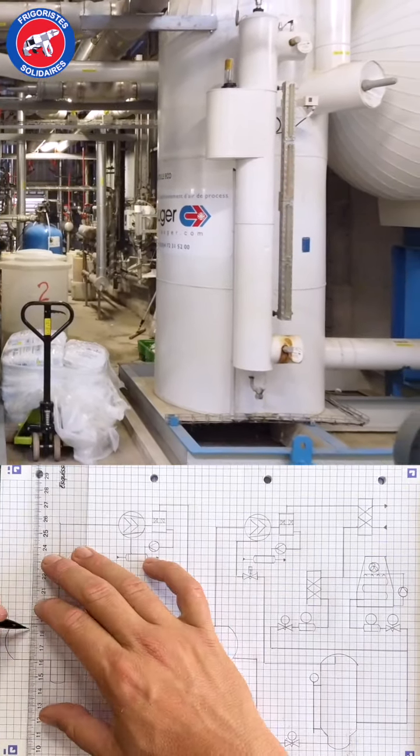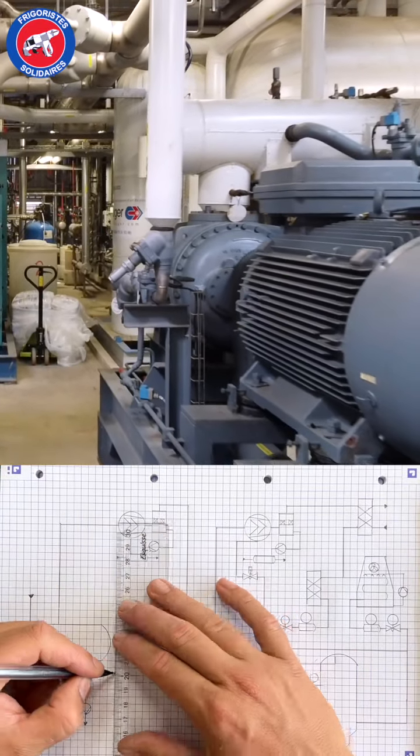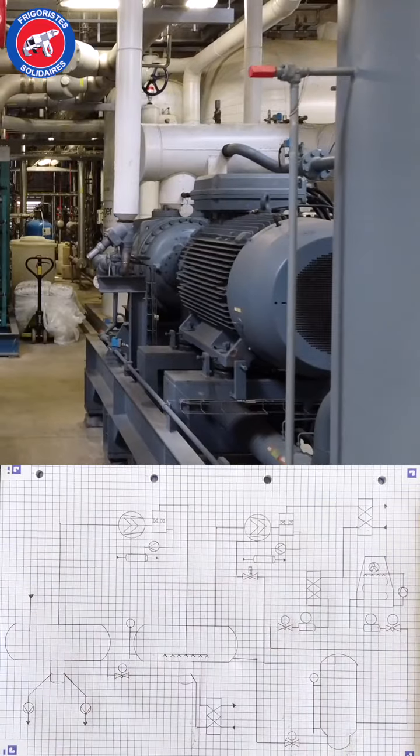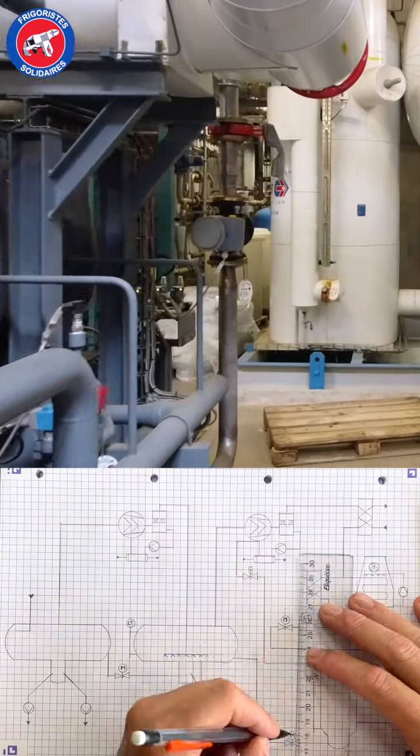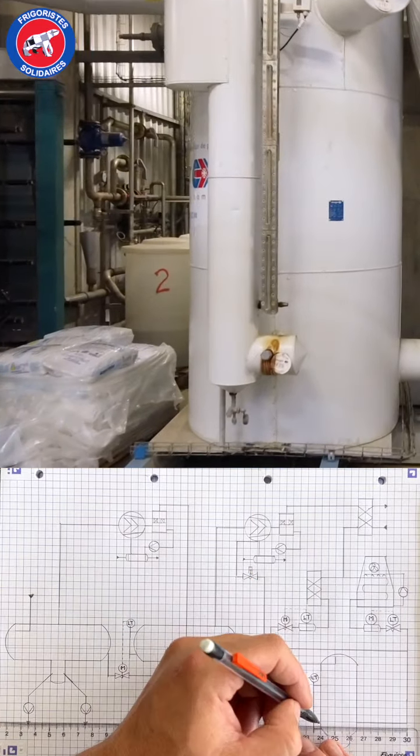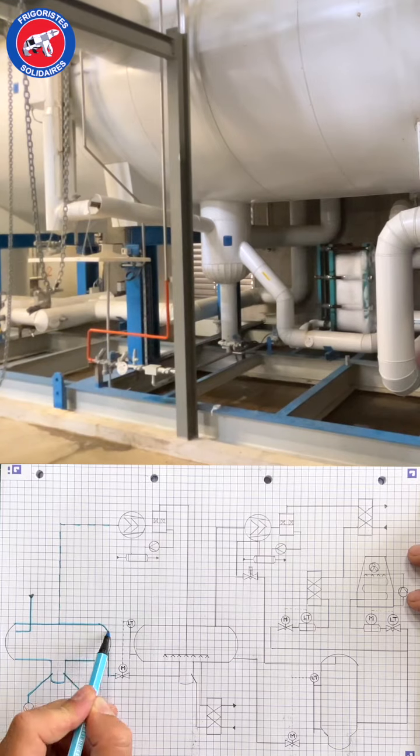The expanded fluid goes into the economizer receiver to supply the medium pressure compressors with vapor at zero degrees C. A level sensor controls motorized valve which sends the liquid to the medium pressure liquid separator.